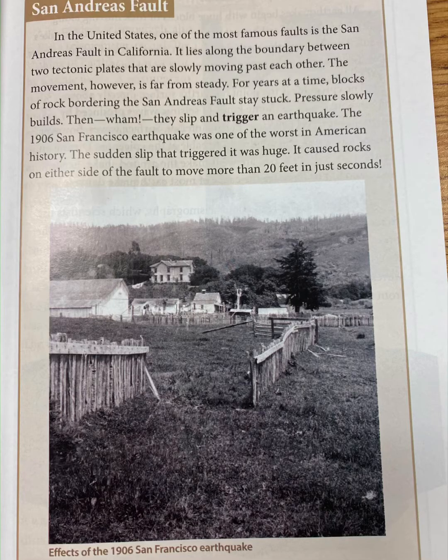The 1906 San Francisco earthquake was one of the worst in American history. The sudden slip that triggered it was huge — it caused rocks on either side of the fault to move more than 20 feet in just seconds.